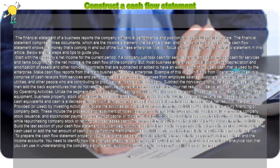Subtract the non-cash profits like accounts receivable, then add back expenditures that do not require cash, like depreciation and amortization. Your net result will be called cash provided, or used, by operating activities.